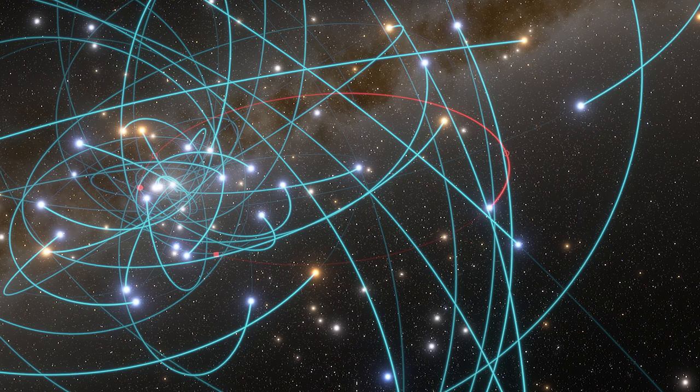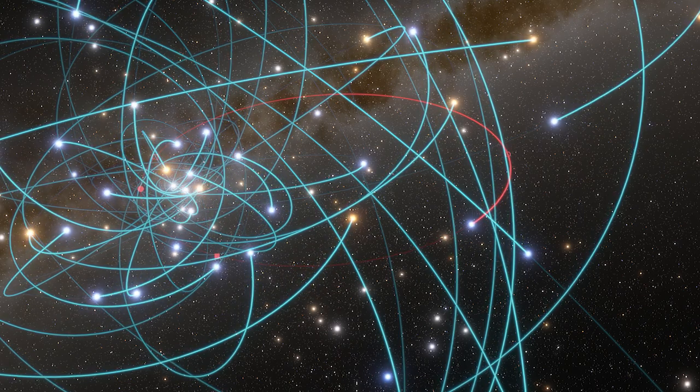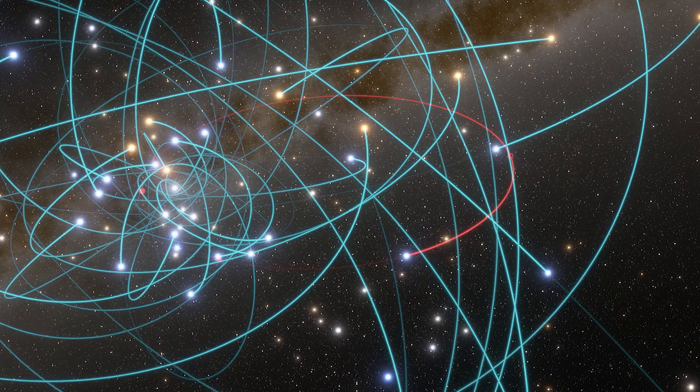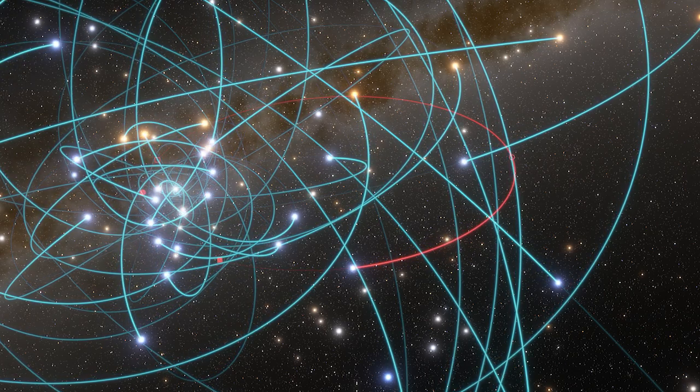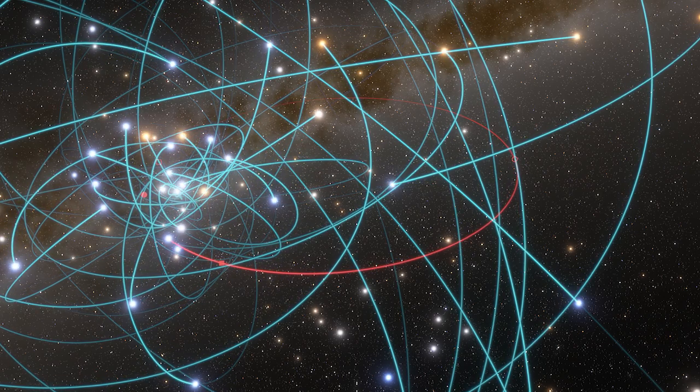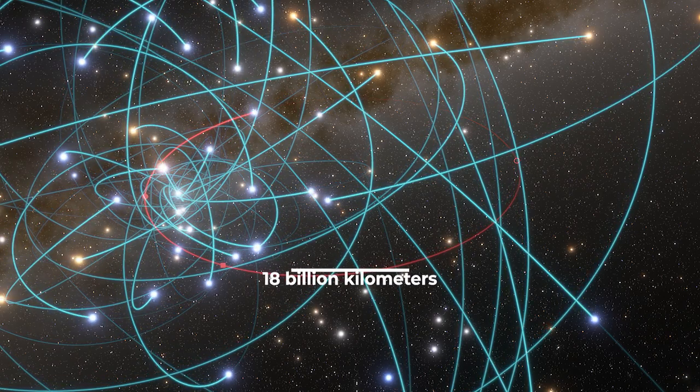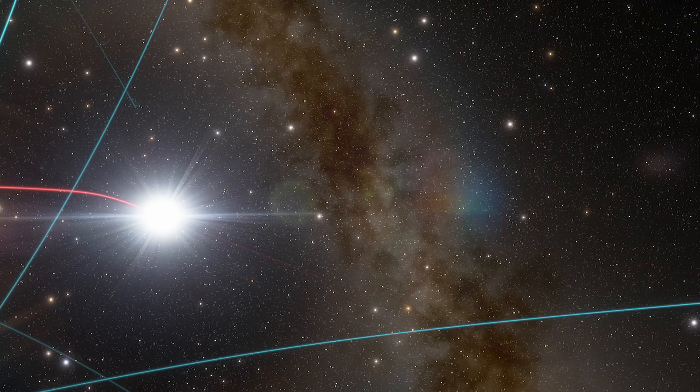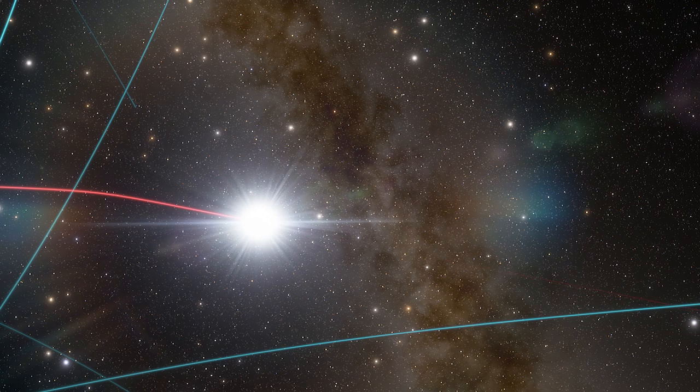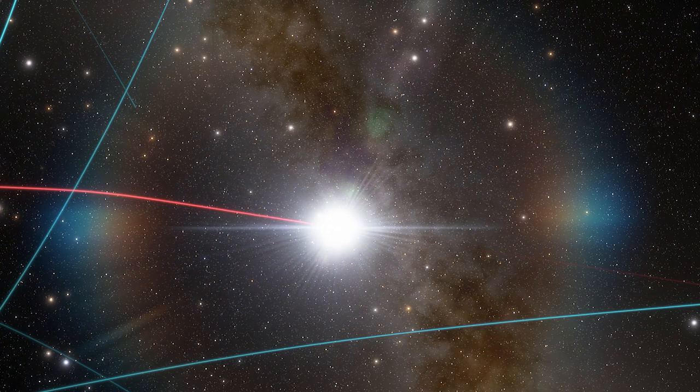Another star orbiting close to Sagittarius A, called S2, was once considered to be the fastest star. At its closest approach, or periapsis, its 16-year orbit brought it within around 11 billion miles of the supermassive black hole. The gravitational kick from this close approach accelerated the star to 3% of the speed of light.